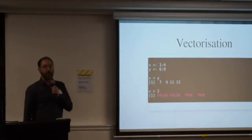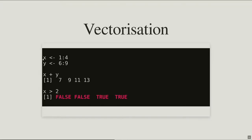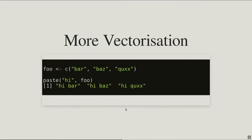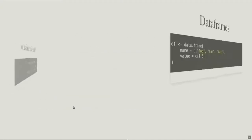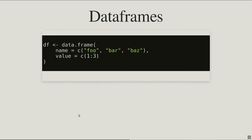The fact that everything is a vector has some cool consequences. If you create a vector X with values 1 to 4 and another vector Y with values 6 to 9, adding them together just adds each corresponding value — no loops needed. You can also do logical expressions: checking if X is greater than 2 gives you a vector of logical values. Many built-in functions are vectorized too — paste() will concatenate 'hi' to the beginning of each value in a vector automatically.